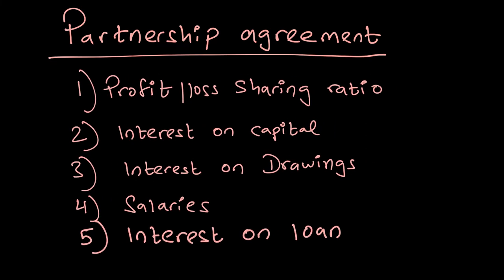The first important partnership agreement term is the profit and loss sharing ratio — how profits and losses will be divided amongst partners. Then there is interest on capital: if one partner has invested more than another, that partner should be compensated. The partnership, out of its profits, pays interest on the amount of capital invested. If partner A has invested more than partner B, A gets a higher return, which compensates for the additional capital — otherwise that partner might want to withdraw their capital.